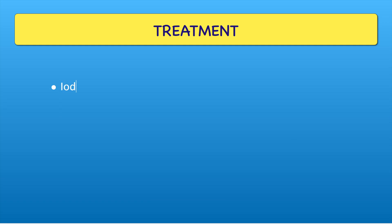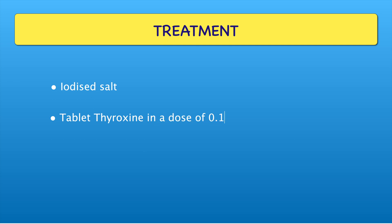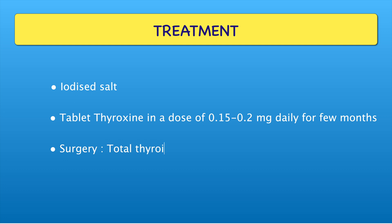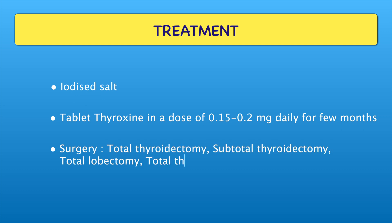Now let's come to the treatment part. Treatment options include taking iodized salt, tablet thyroxine in a dose of 0.15 to 0.2 mg daily for a few months, and surgery — which includes total thyroidectomy, subtotal thyroidectomy, and total lobectomy.